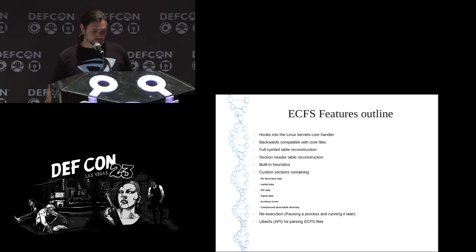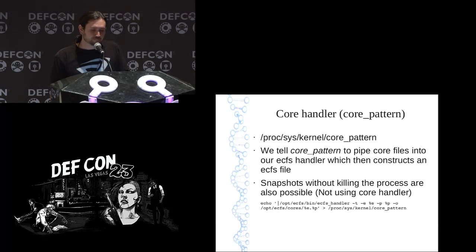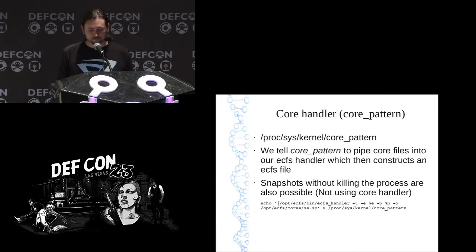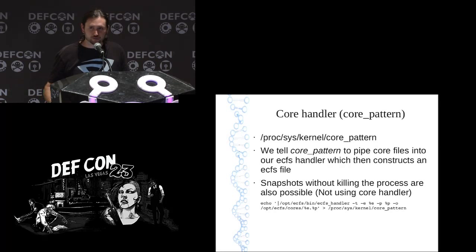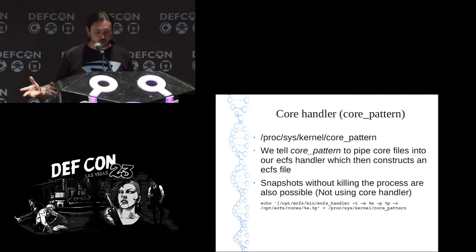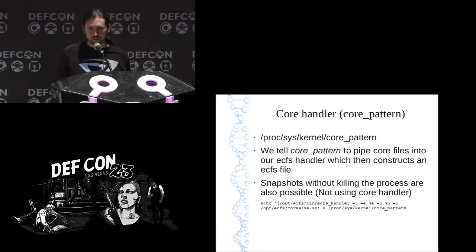ECFS plugs into the kernel's core handler as a user land application — you don't need to modify the kernel. It proxies the kernel core pattern, which Ubuntu's Apport also modifies. Using the pipe symbol, you can tell the kernel core handler to pipe the core file it's creating into the standard input of the ECFS handler, which then transforms that core file and spits out an ECFS file. That command shown is the basic command for enabling ECFS on the system. You can also snapshot a process without killing it.